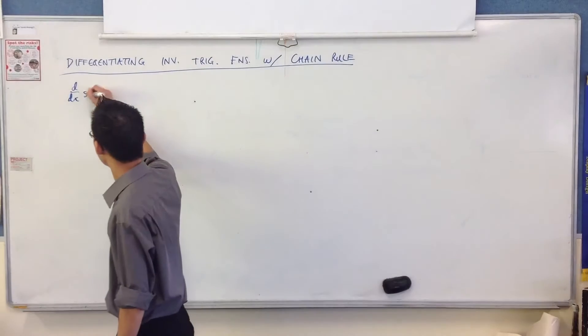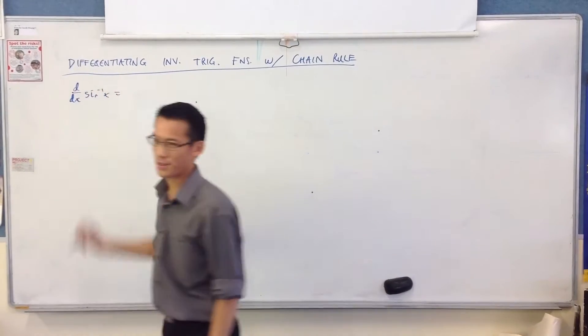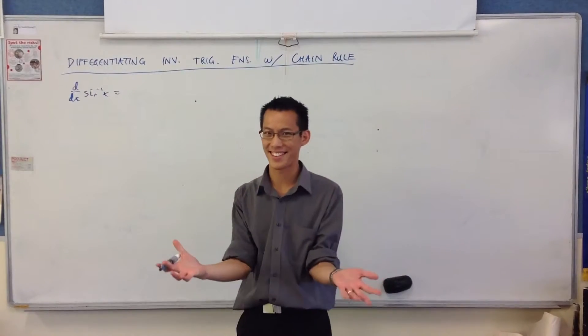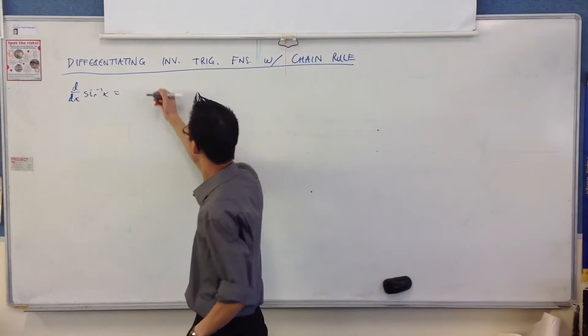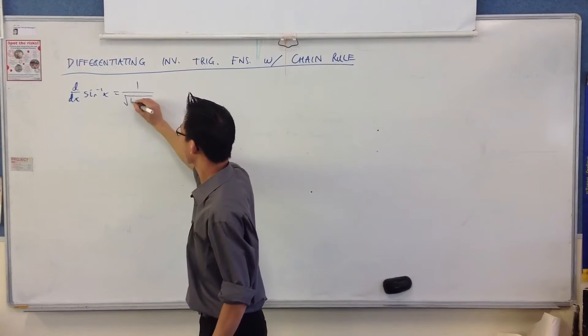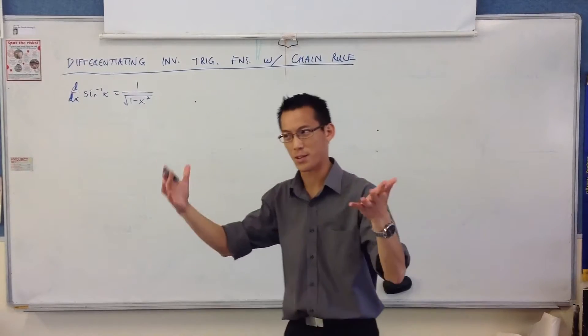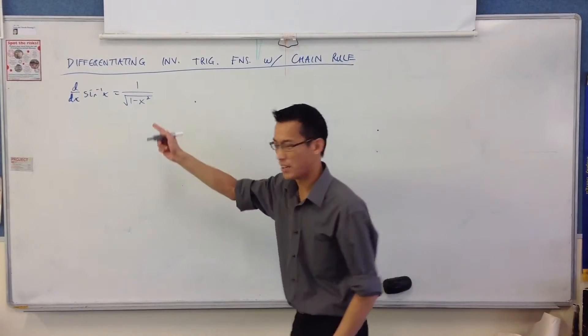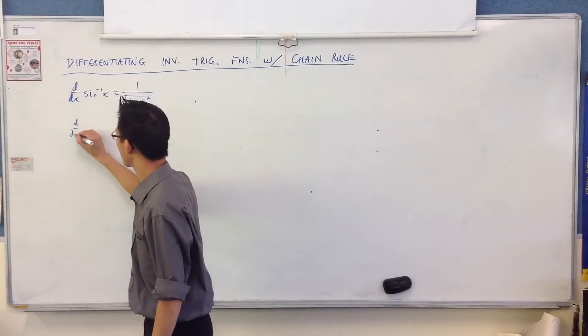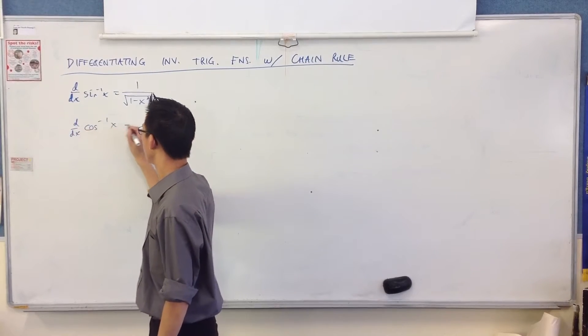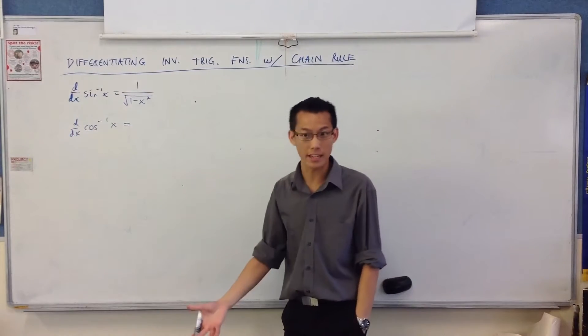Sine! Right. The derivative of sine inverse is... Good! Okay, so you've got one over a semicircle. It's the positive one which makes cos inverse the same thing but negative, yeah?